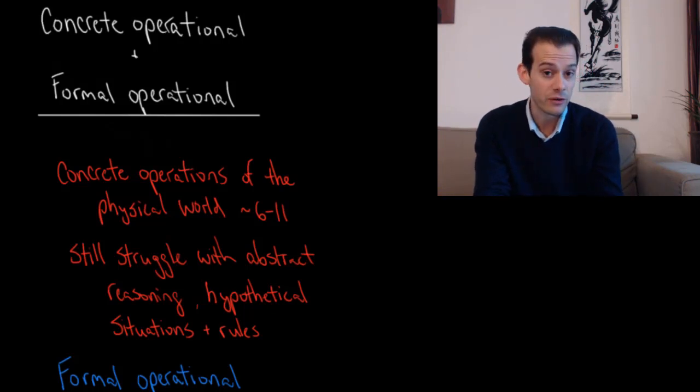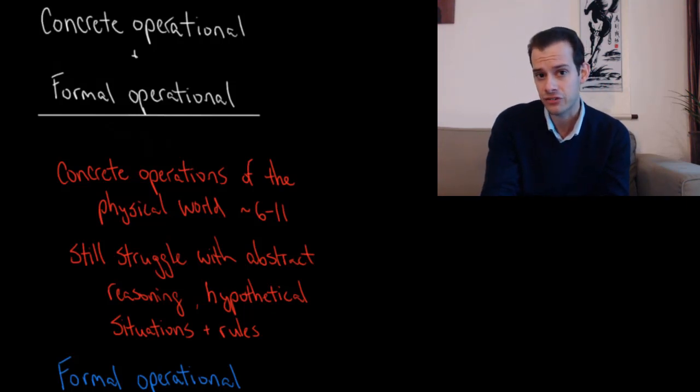That's a hypothetical situation but it follows the physical concrete operations of the world and so they don't make an error. But if you ask children in this concrete operational stage to apply a rule that doesn't follow the physical rules of the world then they start making errors. So if you tell them if I hit this piece of glass with a feather the glass will break, that's the rule, then you say Tommy hit the glass with the feather, what happened?